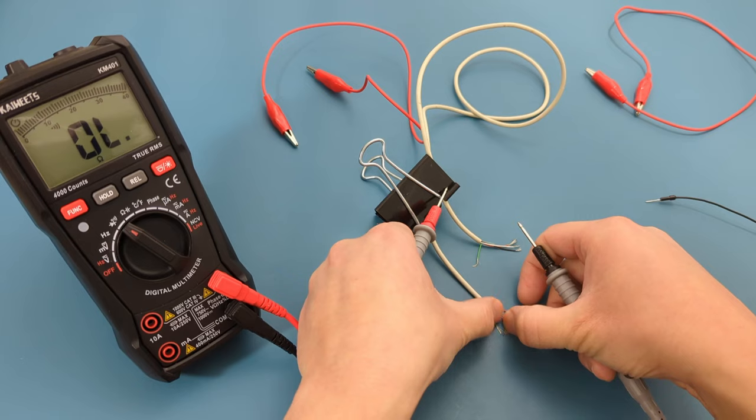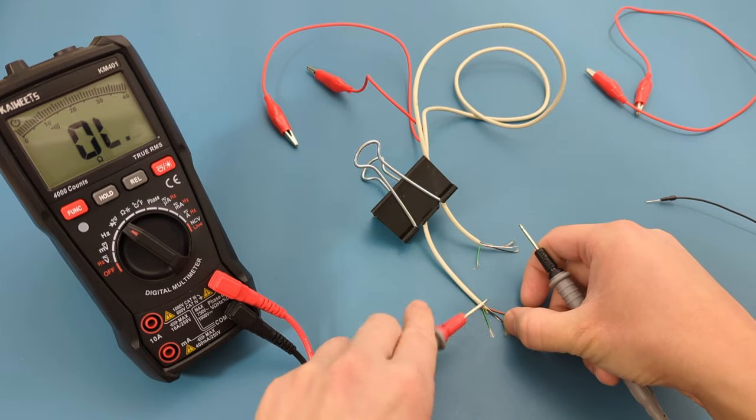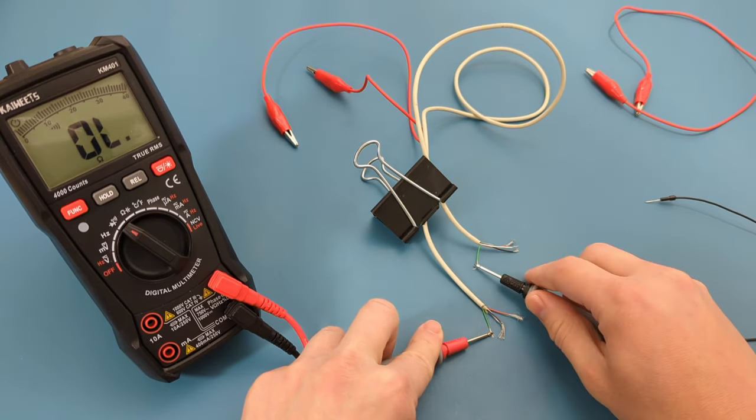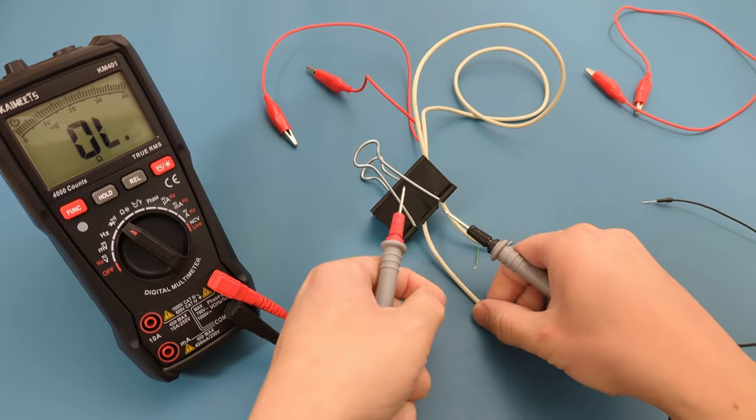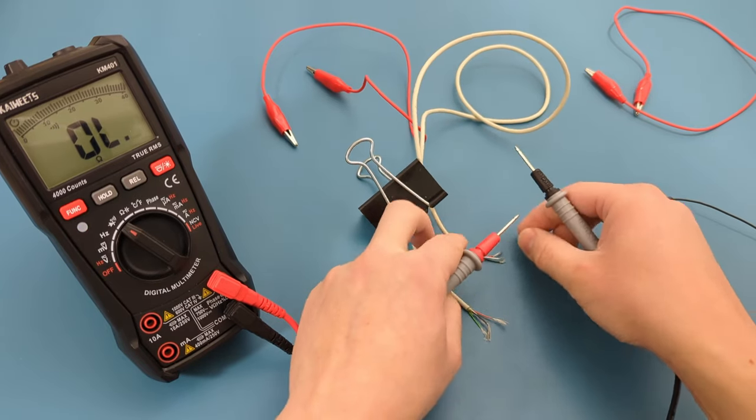Start by touching one of the probe leads to the green wire. Touch the other probe lead to the other end of the green wire. We hear a beep, so this wire is good. Continue to the next wire.